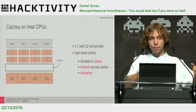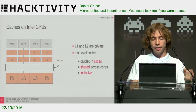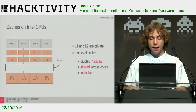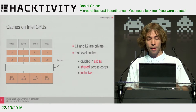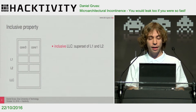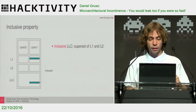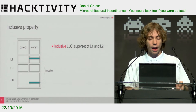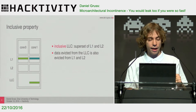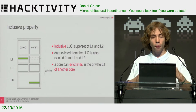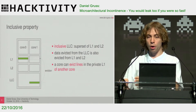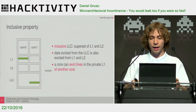Caches work like this: you have multiple cores. The level 1 and level 2 caches are small and they are private. And you have a large level 3 cache which is shared among all cores, and it is inclusive — that means everything inside the level 1 and level 2 caches is also inside the level 3 cache. So we have a cache line in the level 1 cache and it is also in the level 3 cache. If we now evict this data from the level 3 cache, it will also be evicted from the level 1 cache of the other core, which gives us the power to remove things from a remote core — we can throw out data from a core that we cannot access.